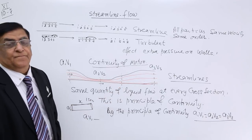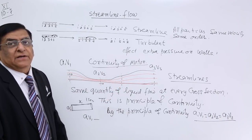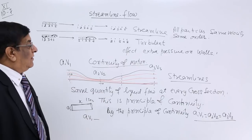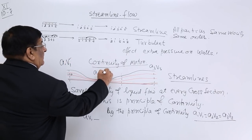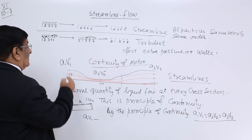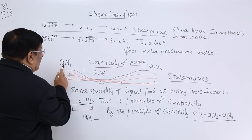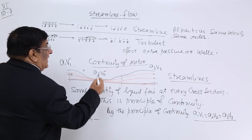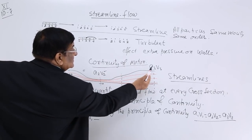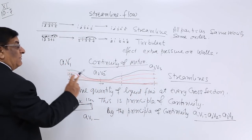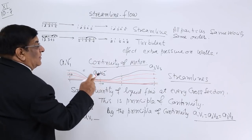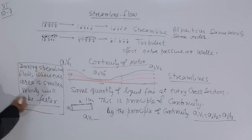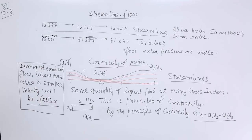On the basis of this principle we can make another important conclusion. If A1V1 = A2V2 and the area is decreasing, then the velocity has to increase. So wherever the pipe is narrow, the velocity will be large. Please remember: wherever the area is smaller, the velocity will be faster.